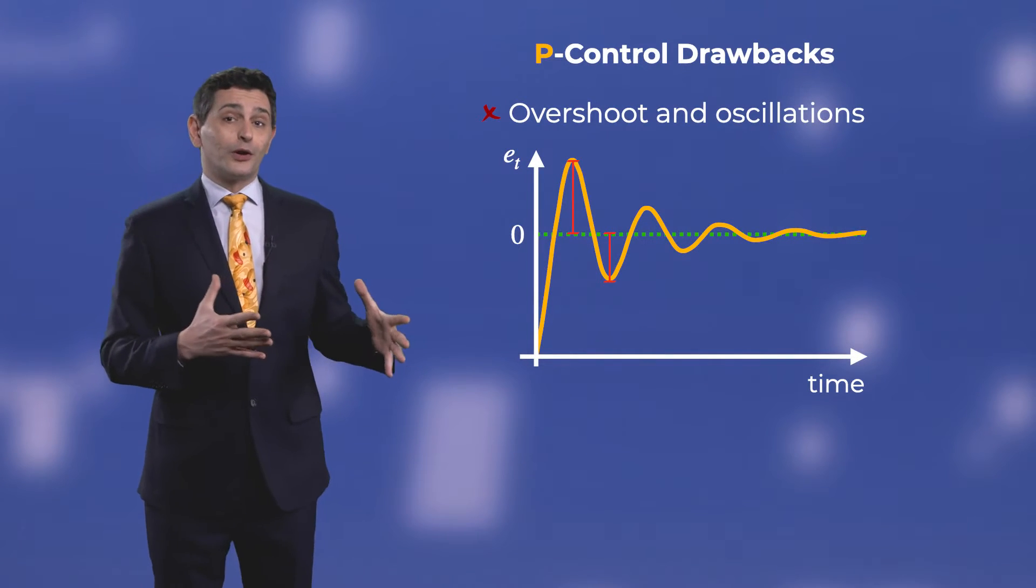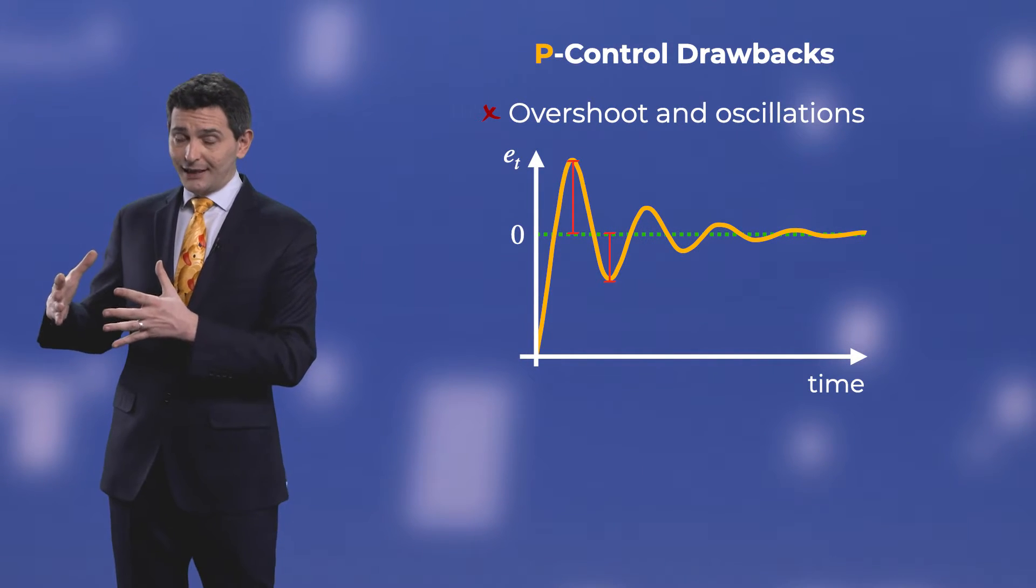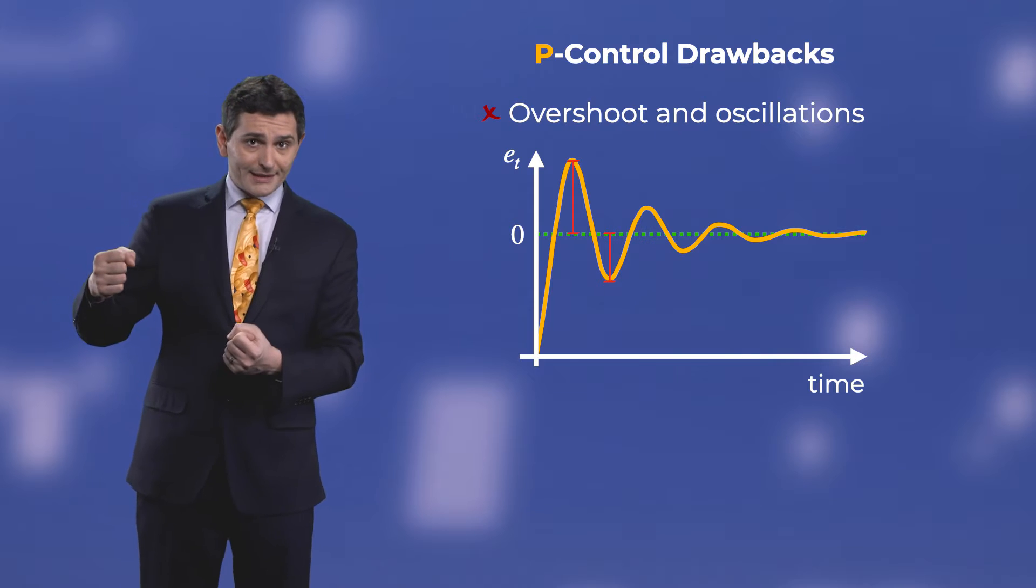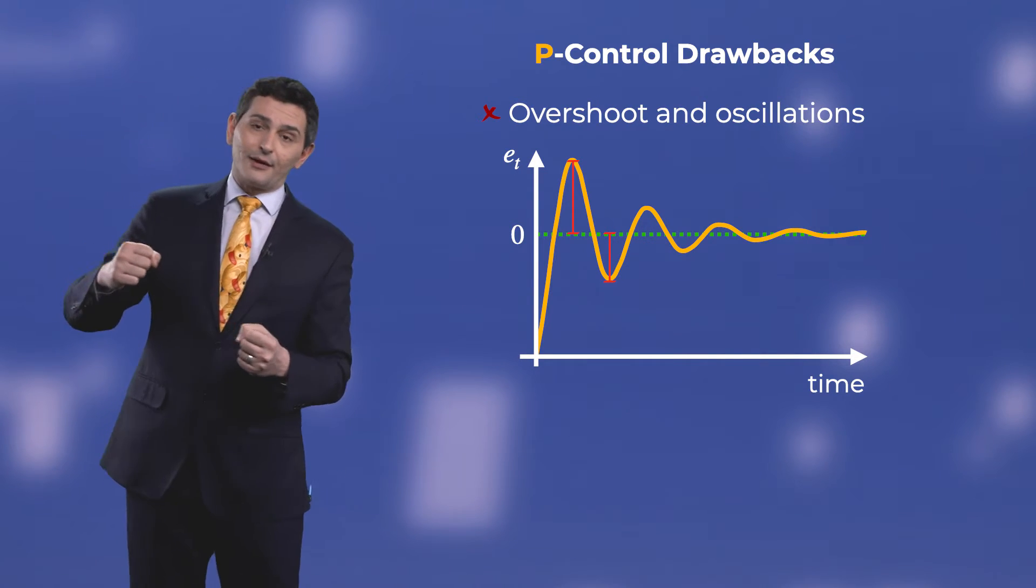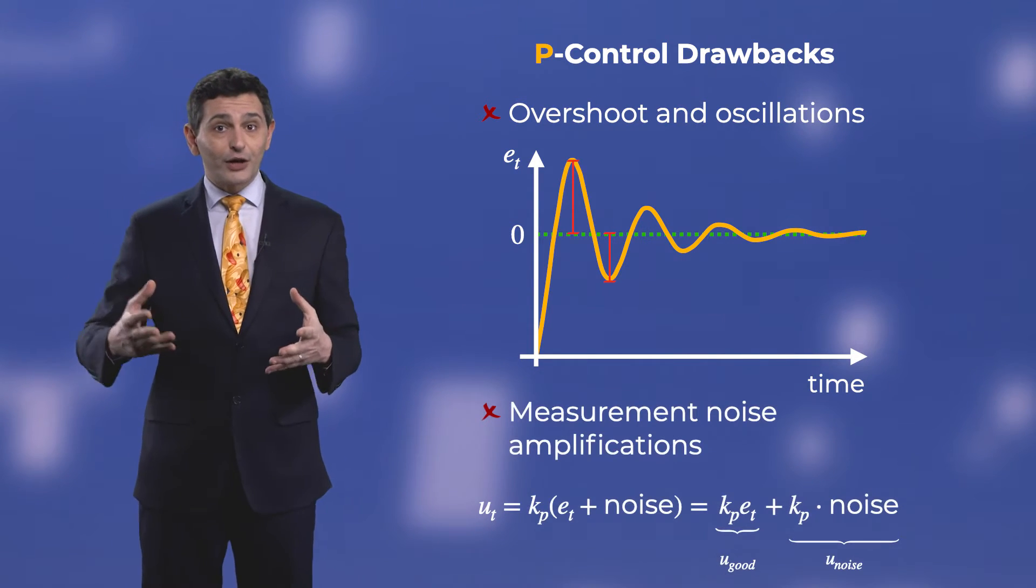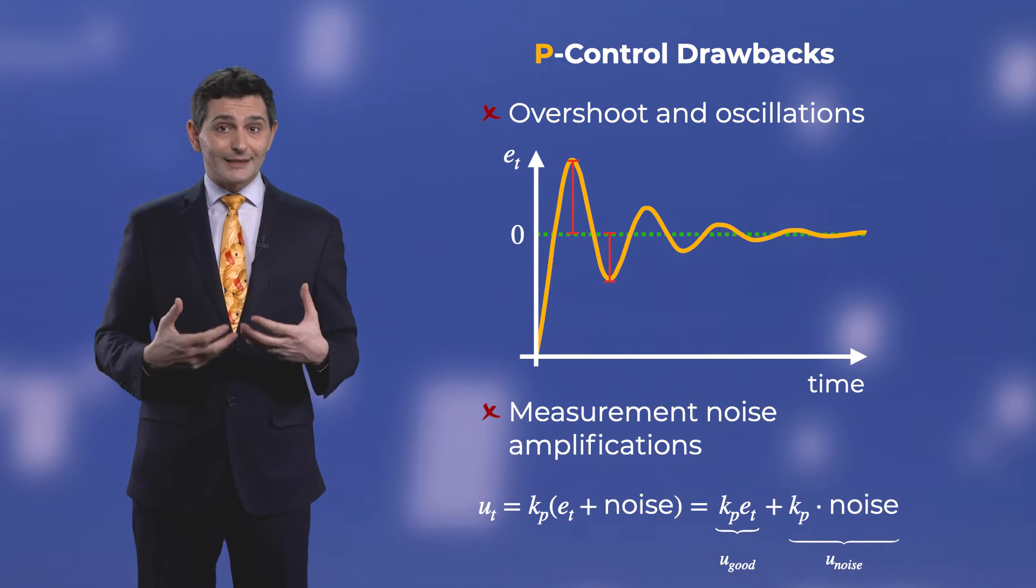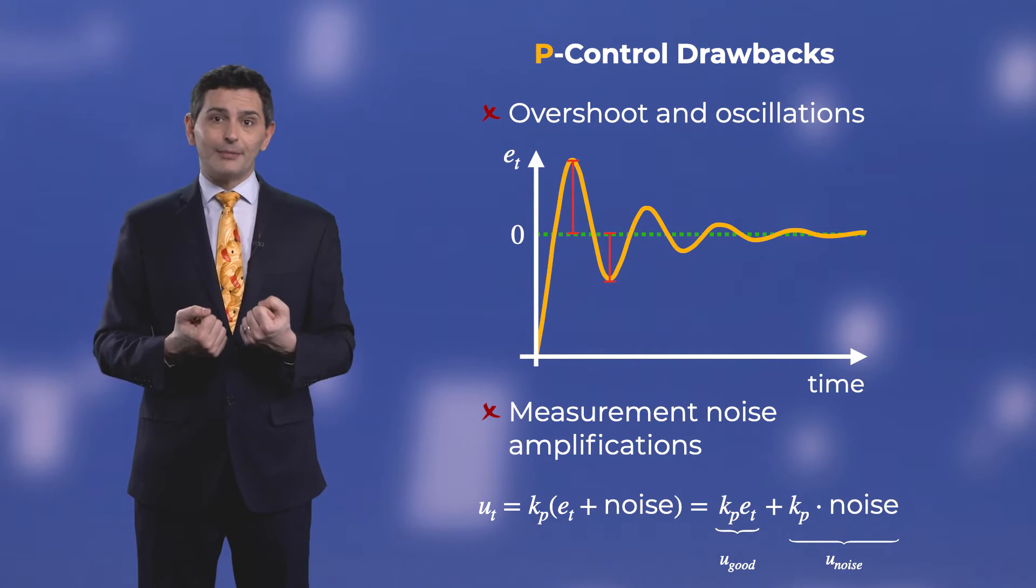Typically, though, the robot will overshoot the reference position, and in an attempt to compensate, it will start to oscillate around the reference. Moreover, the effects of noise in the measurements will be amplified by proportional feedback.